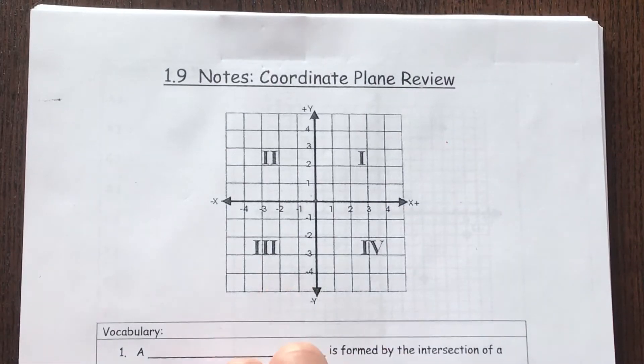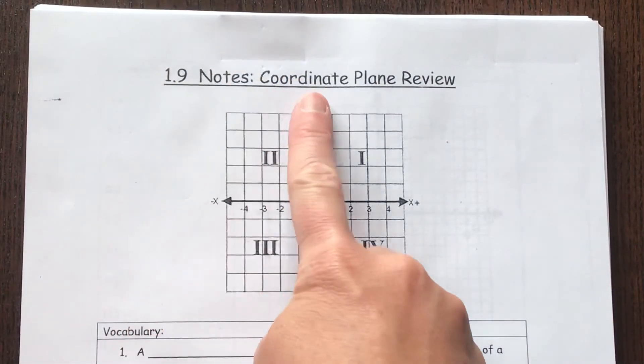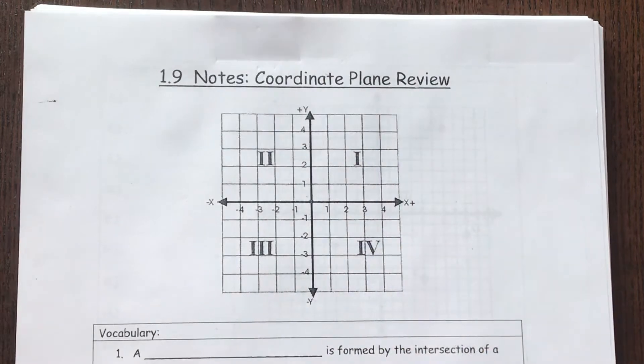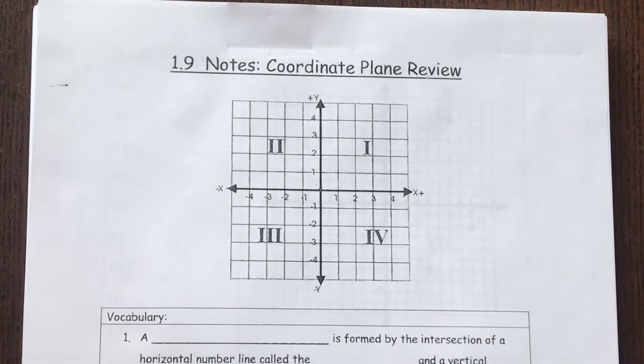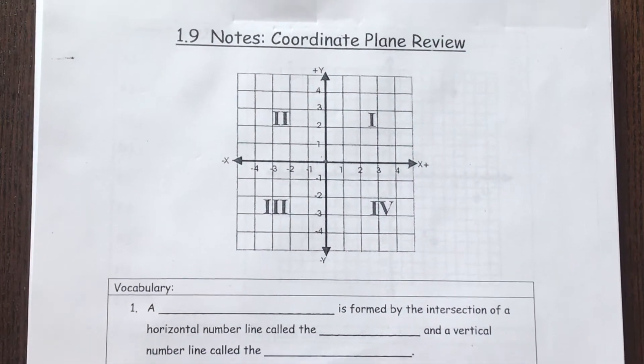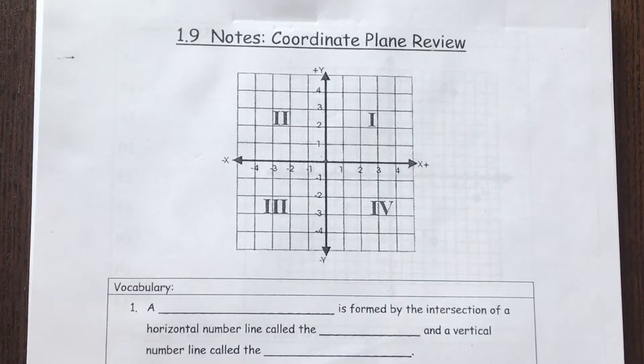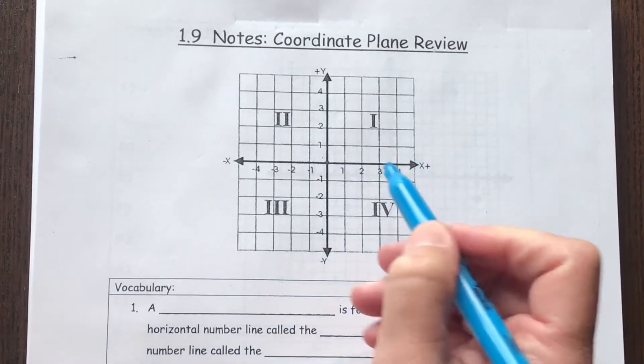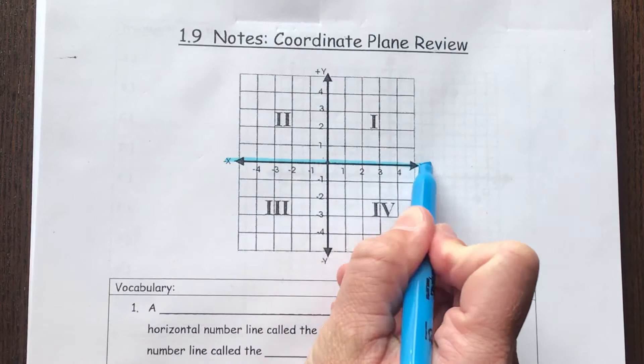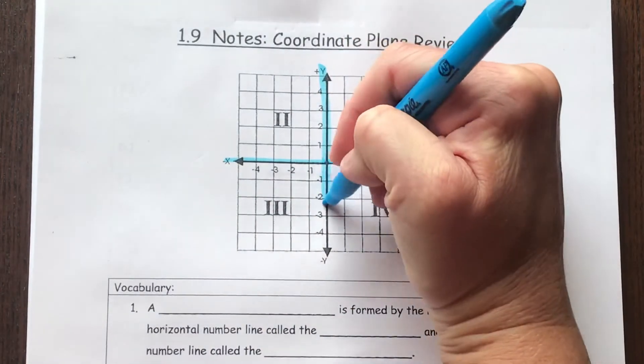In this video I'm going to talk to you about the coordinate plane and just review what the coordinate plane looks like and how it works. So the coordinate plane would be the axis of X and Y together. If you notice, here is our X axis and here is the Y axis.